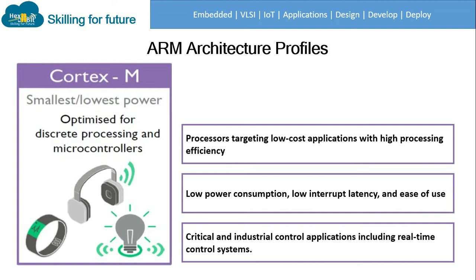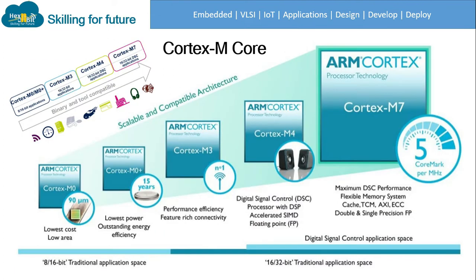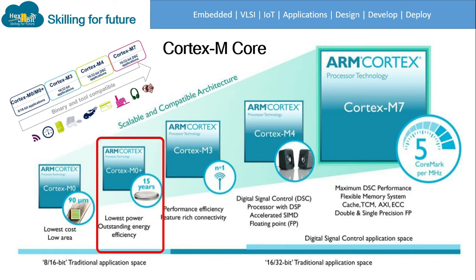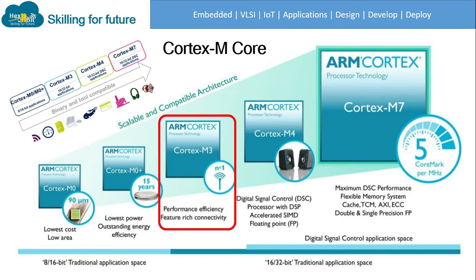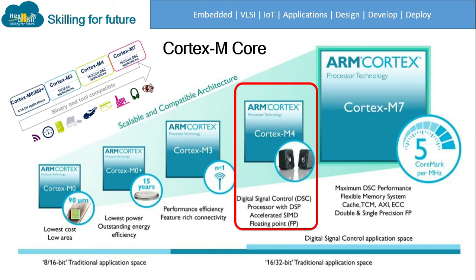ARM Cortex-M provides various cores from basic to advanced level. Cortex-M0 is the low-cost and low-area chip — low area means the features are embedded in very small packages. Cortex-M0+ has the lowest power with outstanding energy efficiency, importing the features of M0 but with improved energy efficiency. Cortex-M3 adds performance efficiency and feature-rich connectivity, combining features of M0 and M0+ with the additional feature of connectivity.